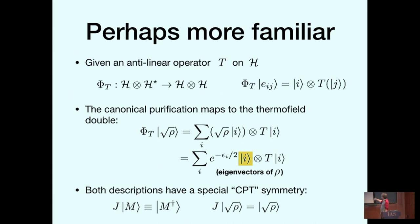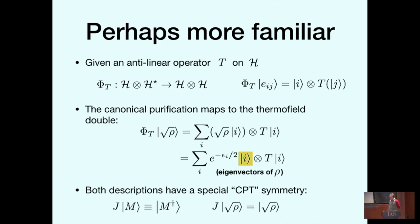One important thing true in both descriptions is that there's a CPT symmetry — a very special symmetry — which I'll call J. In the original description, it just takes M and gives its Hermitian conjugate, which is another vector in the Hilbert space. The state we're interested in, square root rho, is invariant under J. That's what picks it out as being canonical.